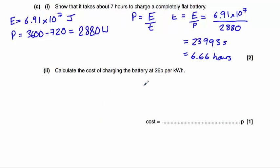Finally, calculate the cost of charging the battery at 26 pence per kilowatt hour. We know that the battery charger uses 3,600 watts of power, or 3.6 kilowatts.